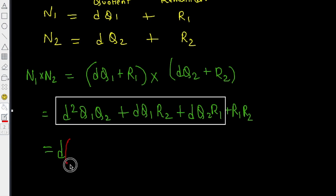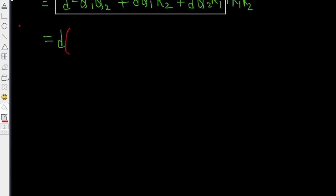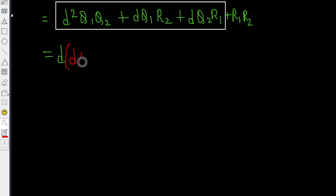D times, let me write the remaining portion in red. Let's write D times q1 q2 plus q1 r2 plus q2 r1, and then we have the product of r1 r2.